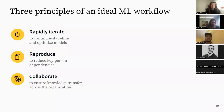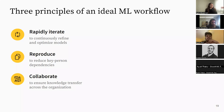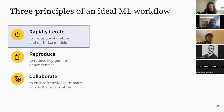That better solution leads to the three principles of an ideal workflow: it should be easy to iterate quickly, it should be reproducible, and it should be collaborative in nature. Let me go through each of these three principles and how Weights and Biases can help.